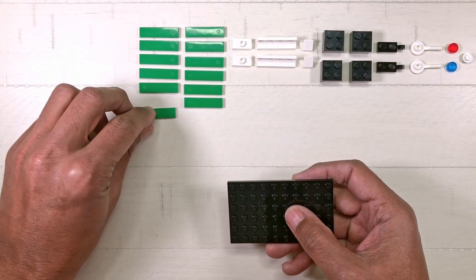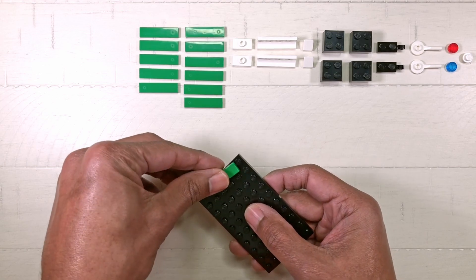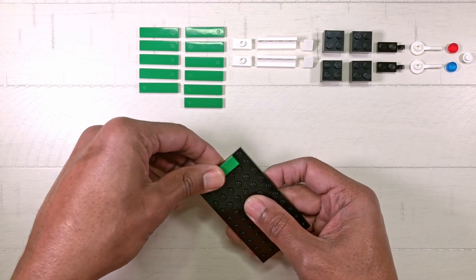Grab the 6 by 10 plate and we're going to start on one end and place four of the 1 by 4 green tiles like so.